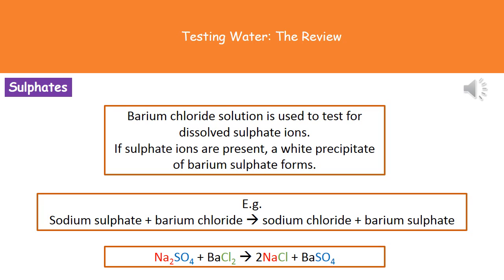We do have the balanced symbol equation at the bottom as well, which we obviously need to be able to write out. The colors show where the different chemicals come from. We start off with sodium sulfate Na2SO4 and we add barium chloride BaCl2. They then react together and what they form are two molecules of sodium chloride NaCl and one molecule of barium sulfate BaSO4.